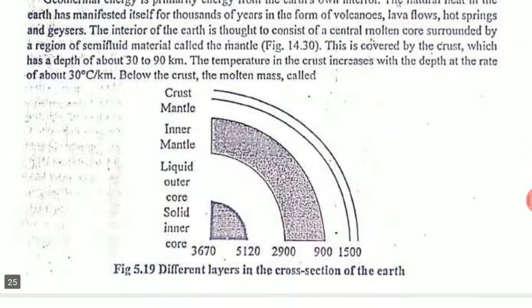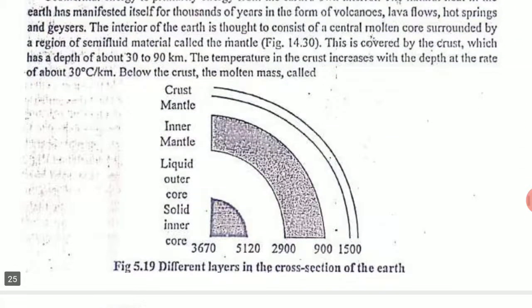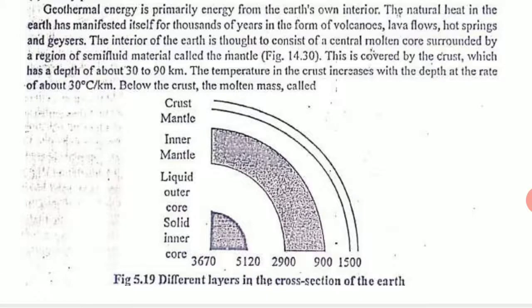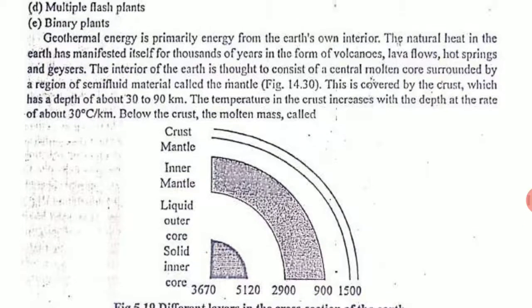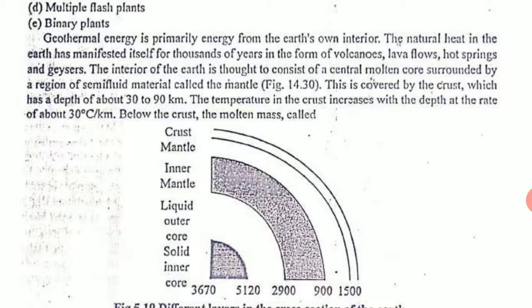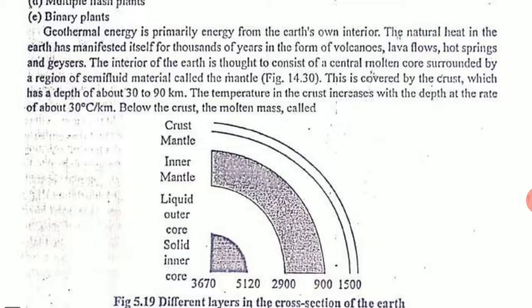You can see the different layers in the cross-section of the earth. The inner core is at 3670 degrees Centigrade, even 5000 degrees Centigrade. You have a solid inner core, then liquid outer core, then inner mantle, and then crust mantle. Almost 900 to 1500 degrees Centigrade you can find.